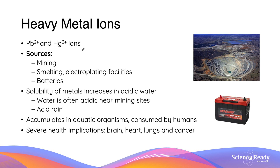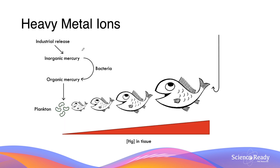The dissolved mercury salts present the highest danger because the ions are highly toxic. Here's a diagram showing the accumulation of heavy metals in aquatic organisms: we start with inorganic mercury, which is turned into organic mercury, then consumed by plankton in the water, which is then consumed by fish of greater and greater size, and ultimately by humans.